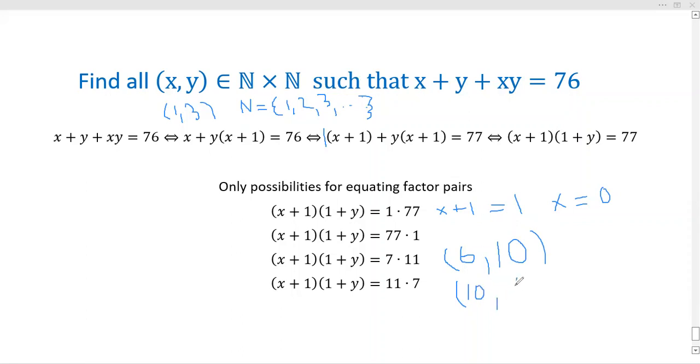It's not surprising - this is a symmetrical looking situation. Those are your two solutions: the ordered pairs (6, 10) and (10, 6). It's not hard to verify this in the original.